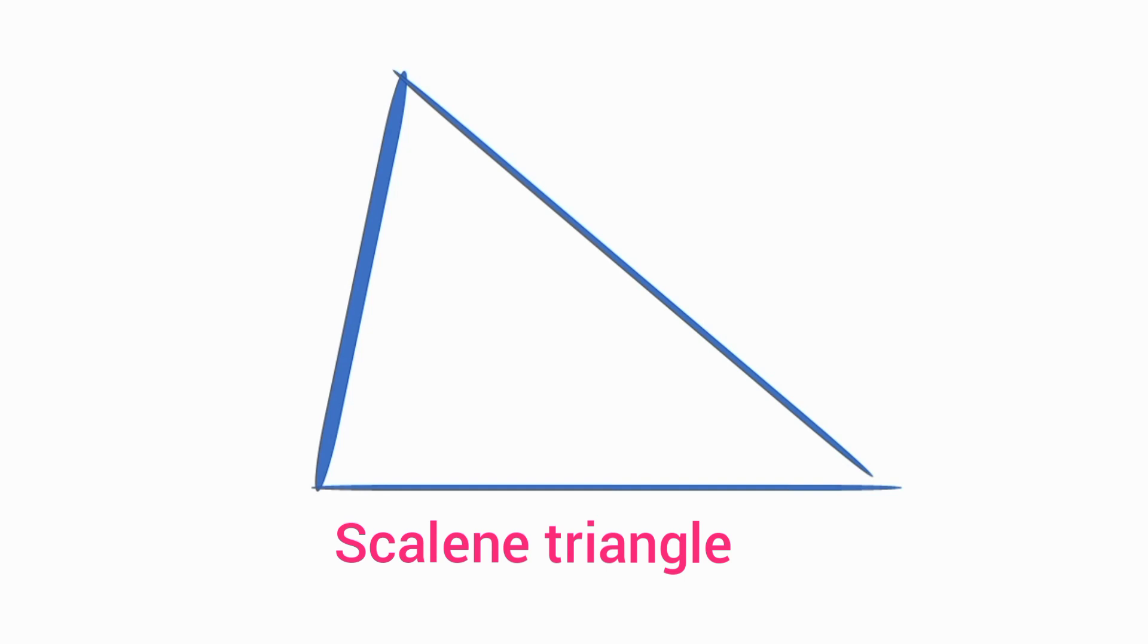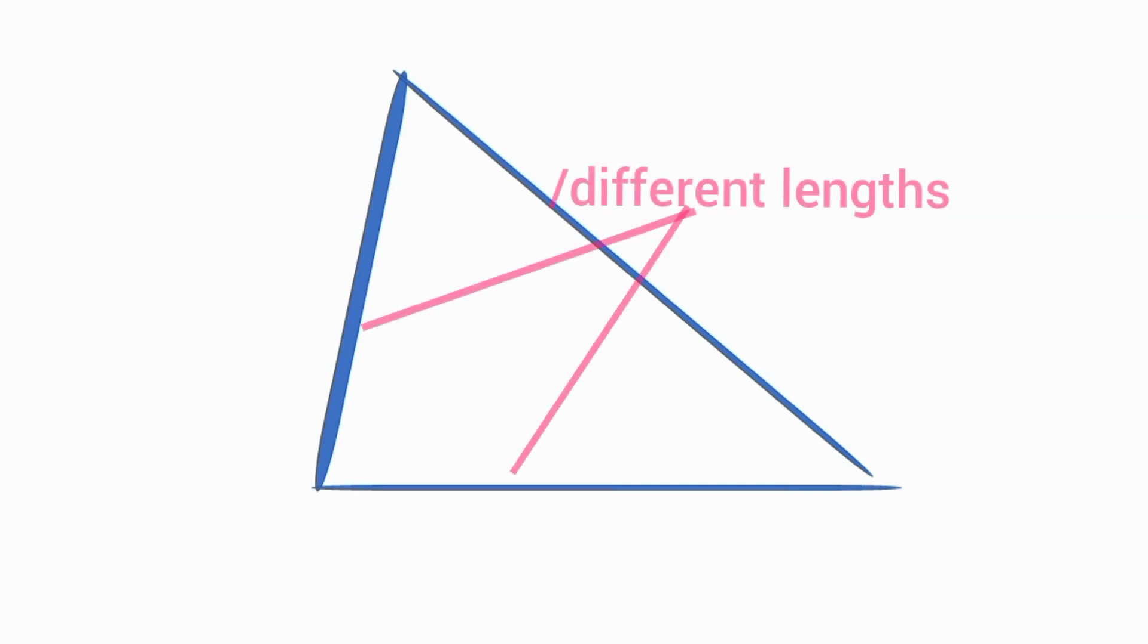One, scalene triangle. A scalene triangle is a type of triangle in which all three sides have different lengths. It is the most general type of triangle, and there are no restrictions on the lengths of the sides.